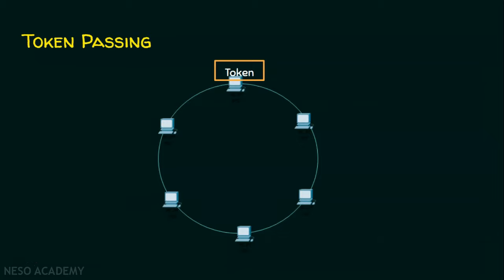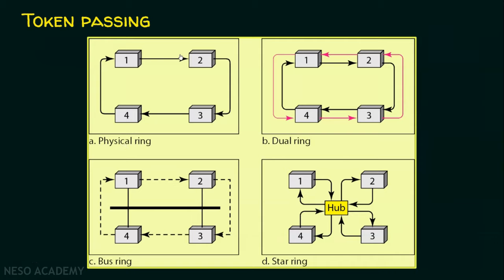As already mentioned, I have just taken a token ring topology in this case. There can be many topologies where token passing can be deployed. This first example is a physical ring, which is the actual token ring mechanism. We also have dual ring, where the token is circulated in both directions — unlike the physical ring, which is unidirectional. There is also bus ring, where we have a common bus and the token is circulated throughout the bus topology. And we can also have a star ring, where a centralized node such as a hub is placed, and the hub forms the star topology.